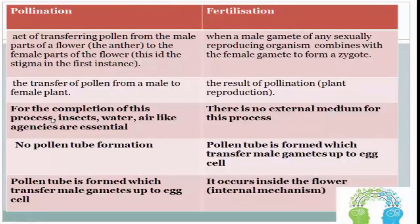For pollination, external agents such as insects, water, and air are essential for the completion of the process. While in fertilization, there is no external medium required for this process.